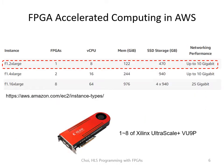The F1 instance has Xilinx Ultrascale VU9P. Depending on the number of FPGAs it has, the naming is a little bit different. The one we're going to use in this class is F1.2xlarge, which has one FPGA board.